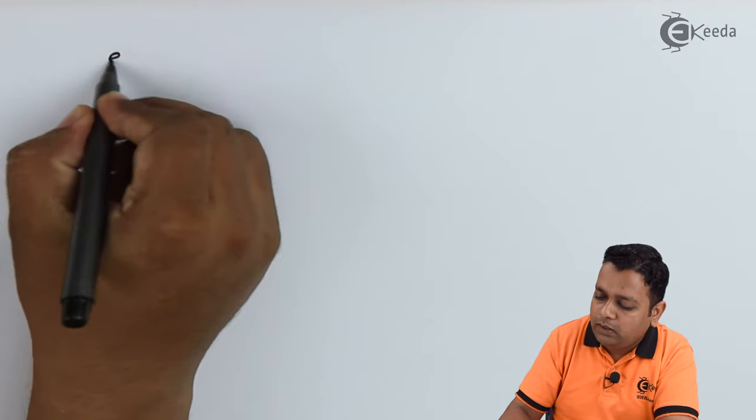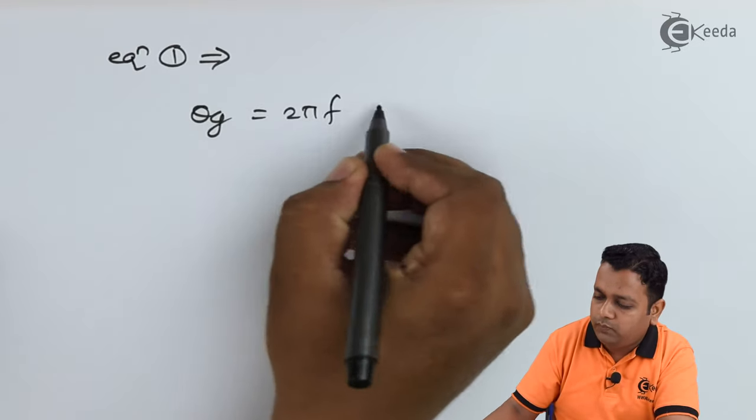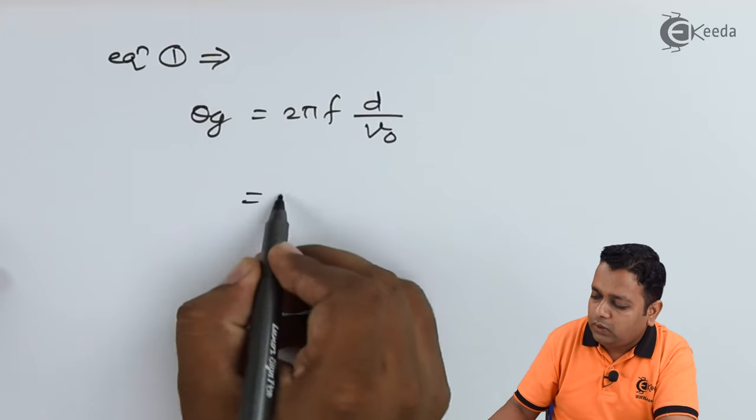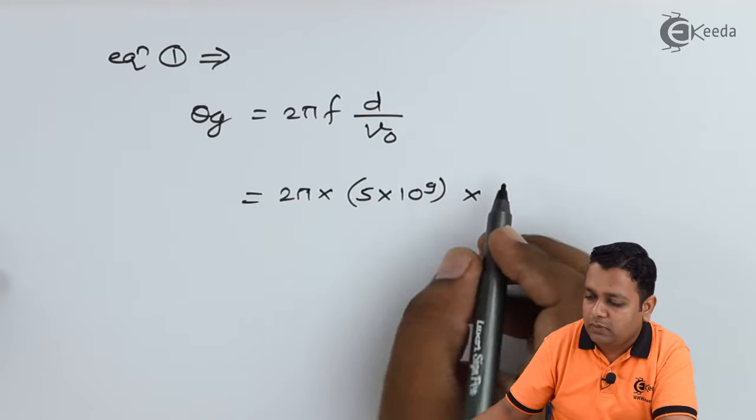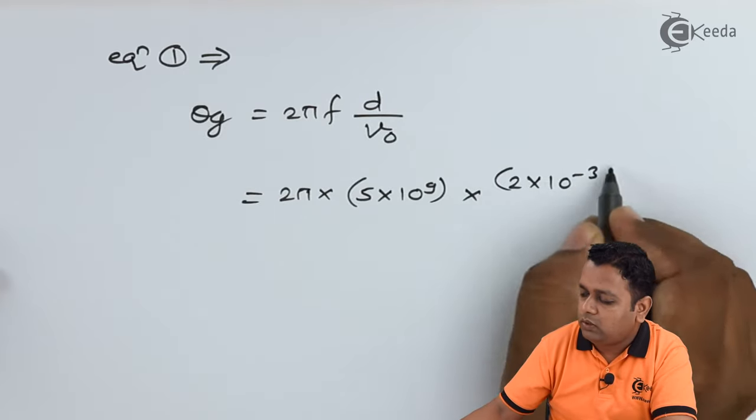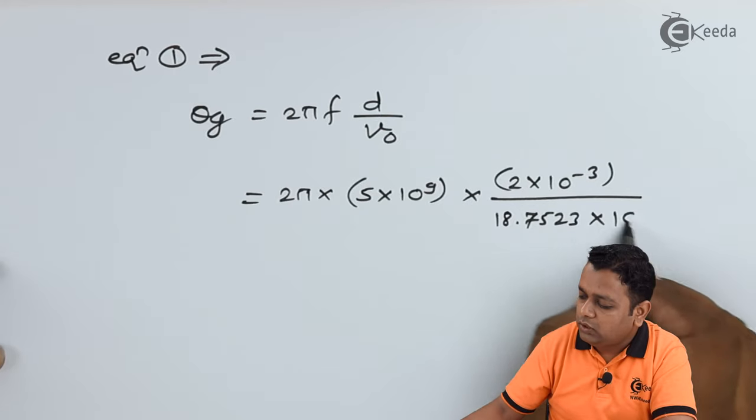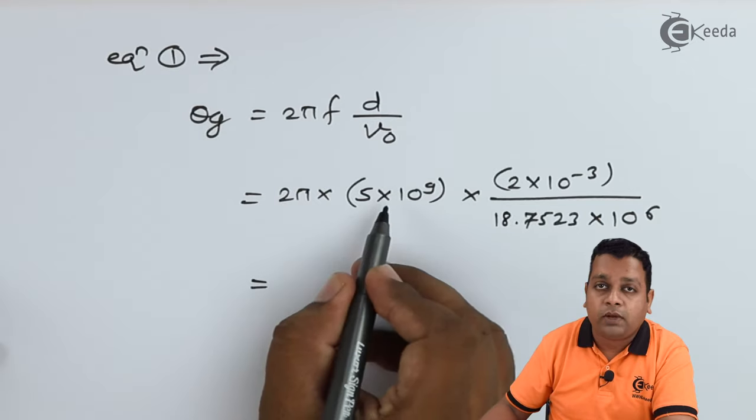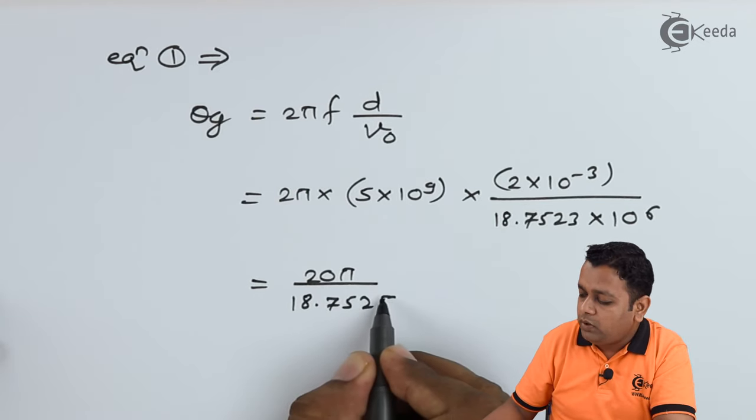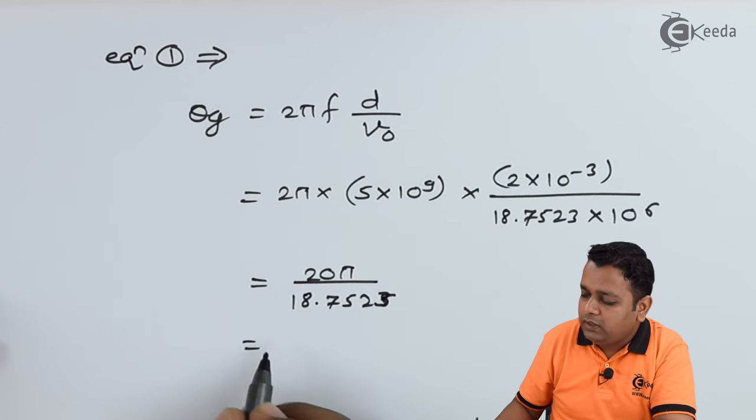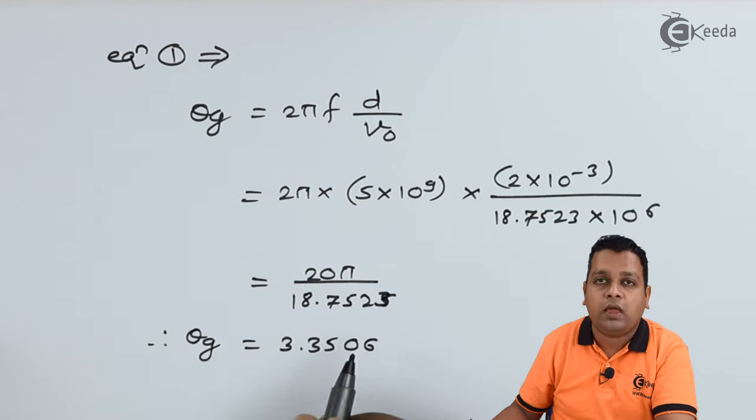Therefore equation number 1 implies θ_G = 2πfd/v0. It will be 2π × 5 × 10^9 × 2 × 10^-3 divided by 18.7523 × 10^6 meters per second. We simplify it to the next step. It will be equal to 2π × 5 divided by 18.7523. Finally we get the value of θ_G = 3.3506.